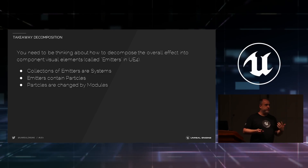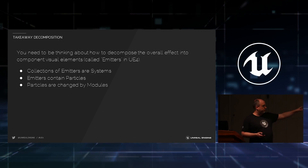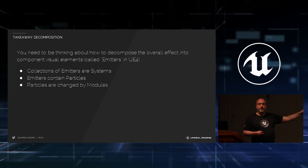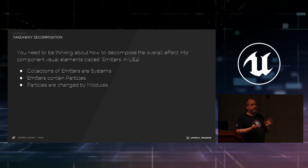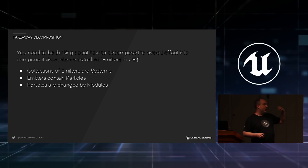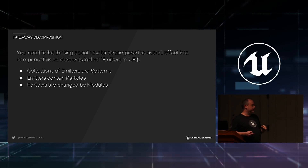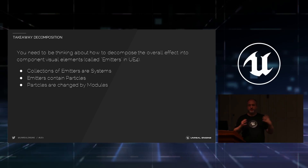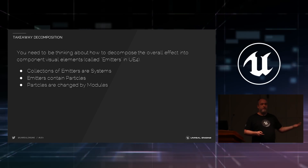Let me give you some terms we use in Unreal. Each of those three components you saw is one emitter — in Cascade or in Niagara. Collections of emitters form systems. Each emitter might have ten, twenty, a hundred, a thousand, a million particles. The emitters own the particles, the systems own the emitters. Particles have all sorts of behavior defined by how they move through space, how they look, how they change over time. The things that drive those behaviors we call modules.